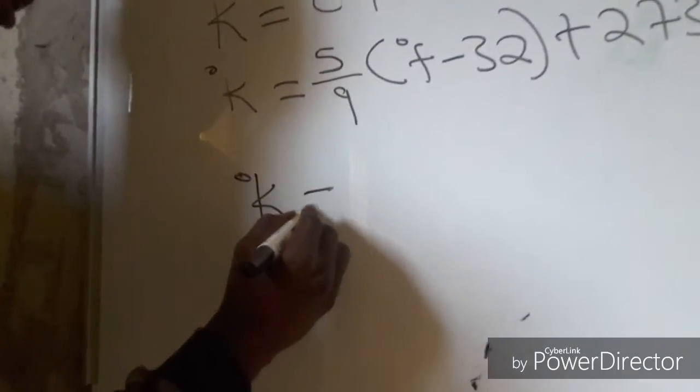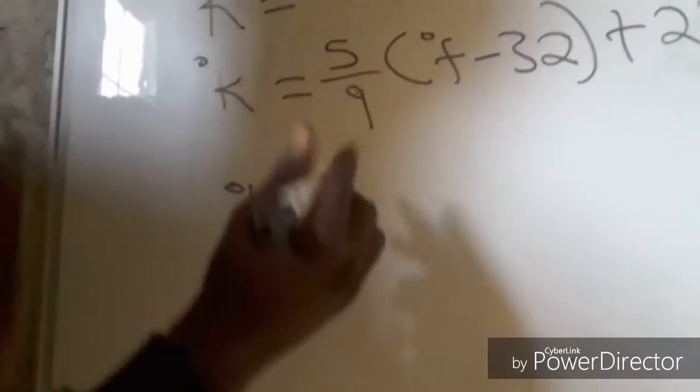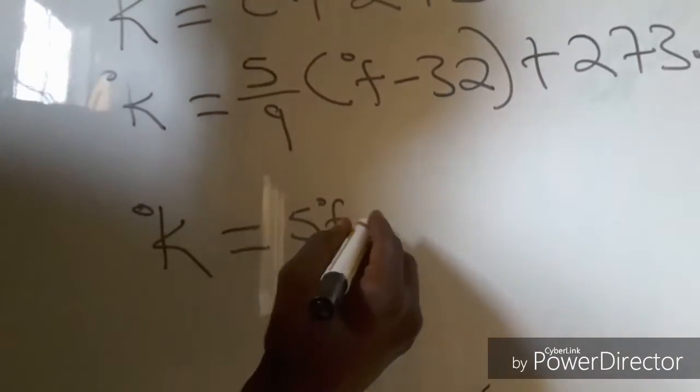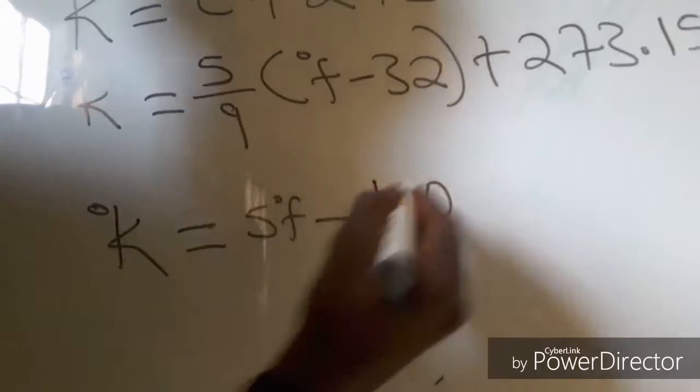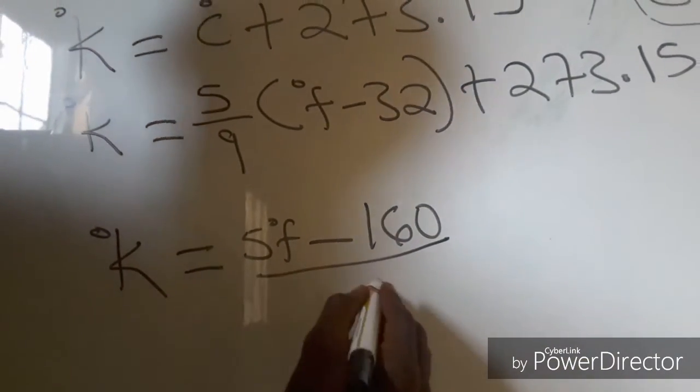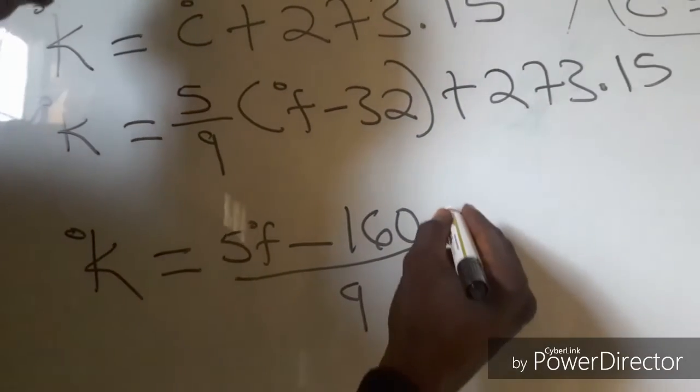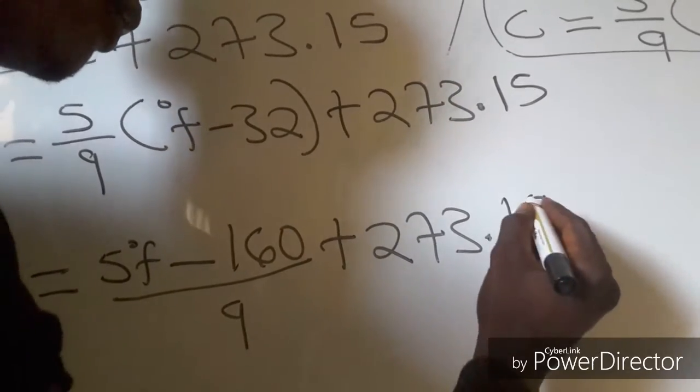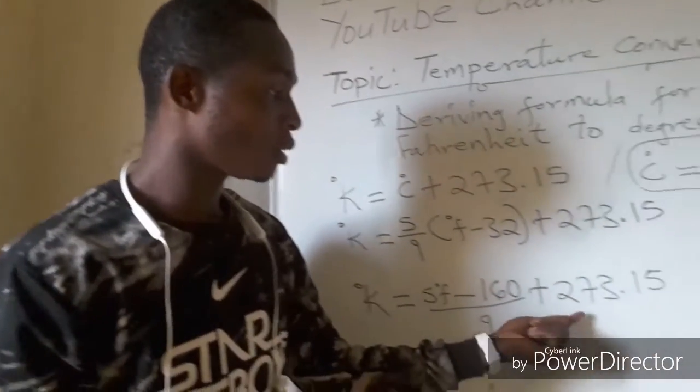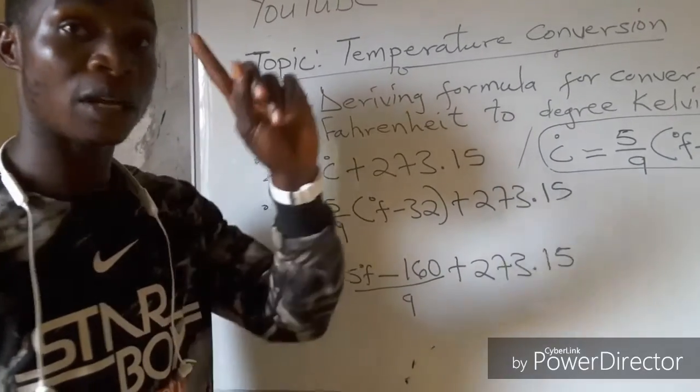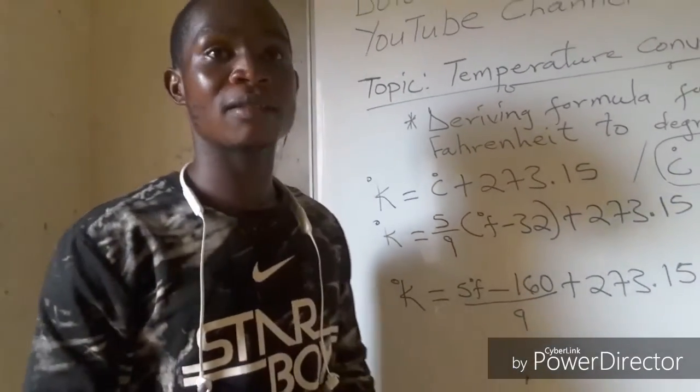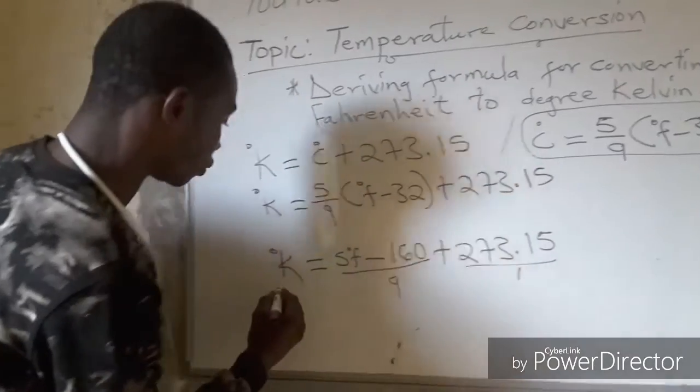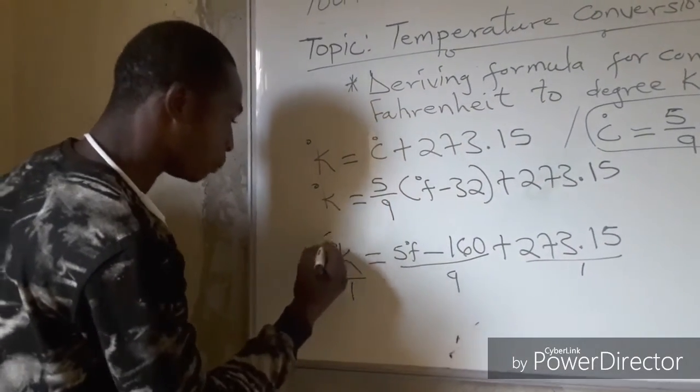will be equal to 5 times degree Fahrenheit, will give us 5 degree Fahrenheit, 5 times minus 32, will give us minus 160, expressed by 9 the denominator, and we add 273.15. Now, we can express either side of the equation by the denominator 1, because by default the value of your variable will both have a denominator of 1.